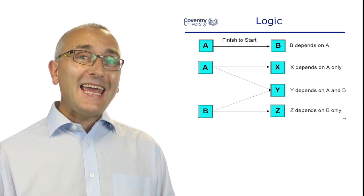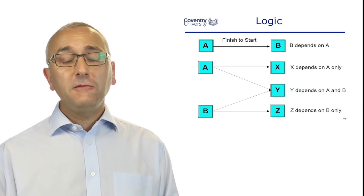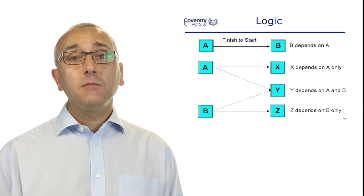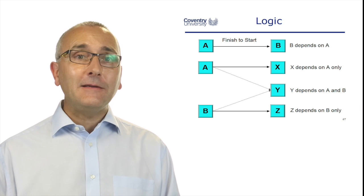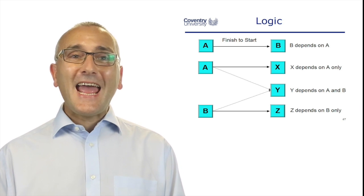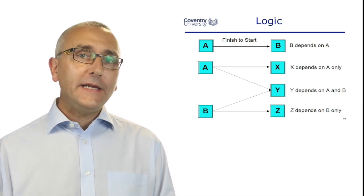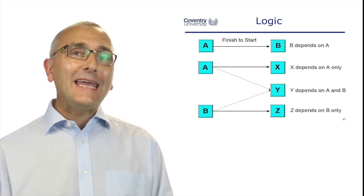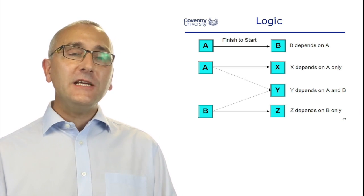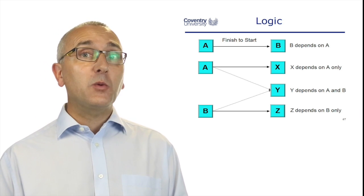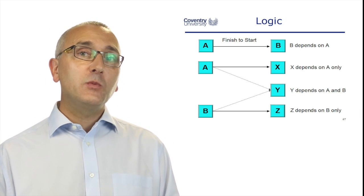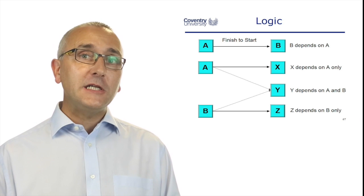This is the logic we're going to use. In the first example here, task A has got to finish before task B can start, so B depends on A. Task X depends on A, but task Y cannot start until both A and B have finished. If A is finished, we could start X, but we cannot start Y because we have to wait for B to finish. The dependency for Y is it depends on A and B.